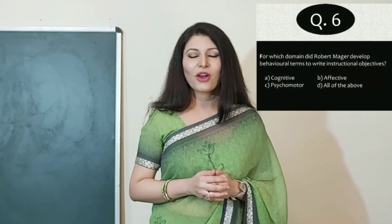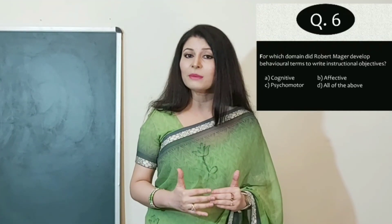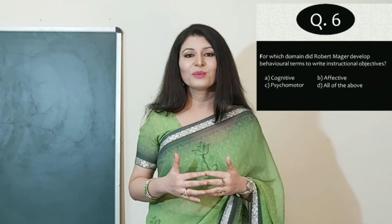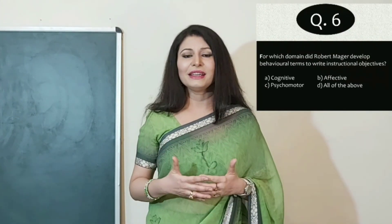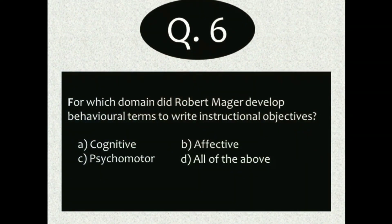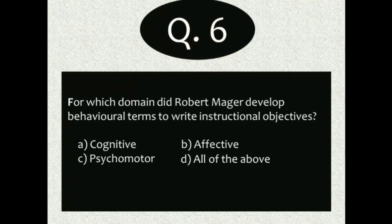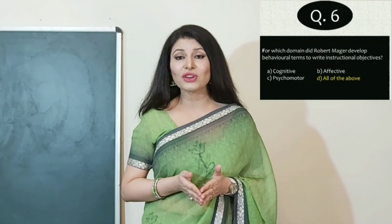Question 6: For which domain did Robert Mager develop behavioral terms to write instructional objectives? A) Cognitive, B) Affective, C) Psychomotor, or D) All of the above. The answer is D — all of the above. Robert Mager developed behavioral terms to write instructional objectives for all three domains of learning.